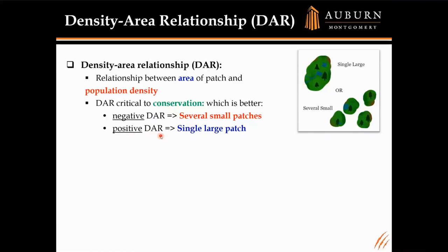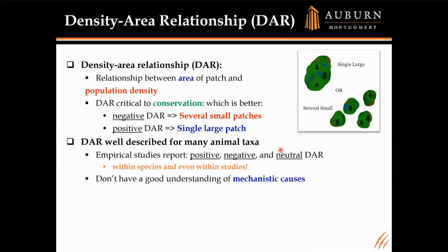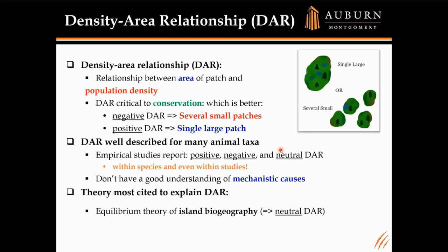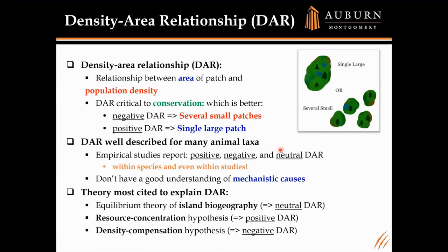Understanding the DAR is important for conservation and other areas. DAR has been well described for many animal taxa. Interestingly, empirical studies report positive, negative, as well as neutral DAR within species and even within the same studies — some species exhibit all three. We don't really have a good understanding of the mechanistic causes behind these differences. The theories most often used are the equilibrium theory of island biogeography (implying neutral DAR), the resource concentration hypothesis (positive DAR), and the density compensation hypothesis (negative DAR). But there's no good understanding of why we'd have intermediate levels of DAR.